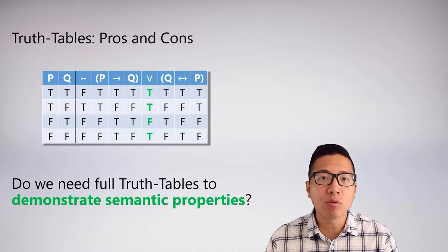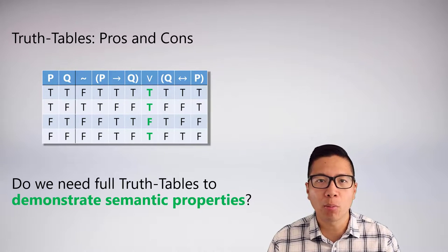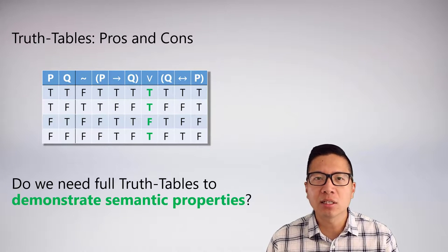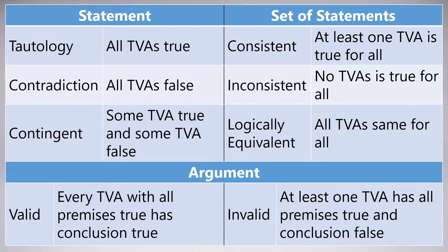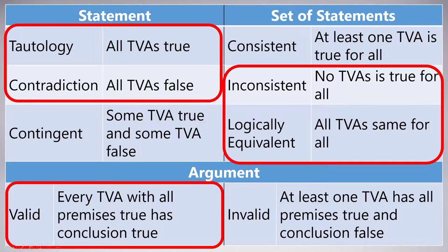So do we really need a full truth table to assess semantic properties? The answer is no, but it actually depends what semantic properties we're talking about. Here's the chart of all the semantic properties. We can actually divide them into two broad categories. The first category are semantic properties that actually require us to know something about the full truth table of a statement, set of statements, or argument. For example, to know that something's a tautology, you need to know that every single TVA yields true as the truth value, which would require a full truth table.